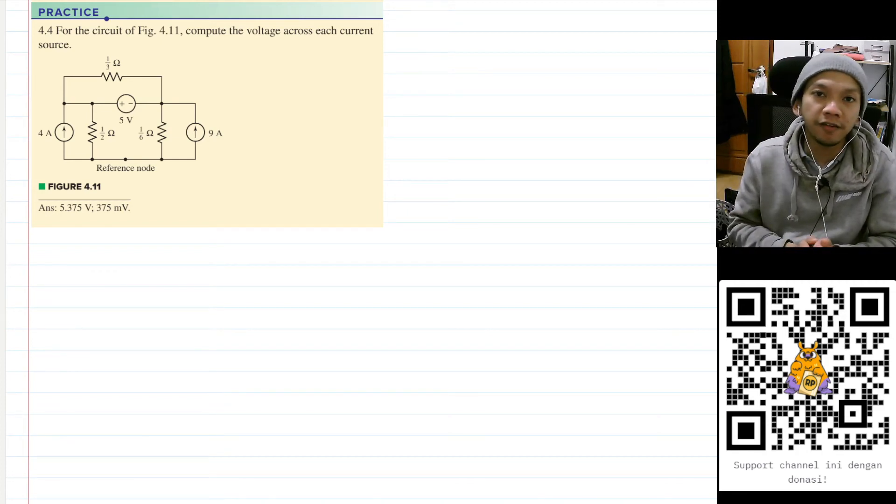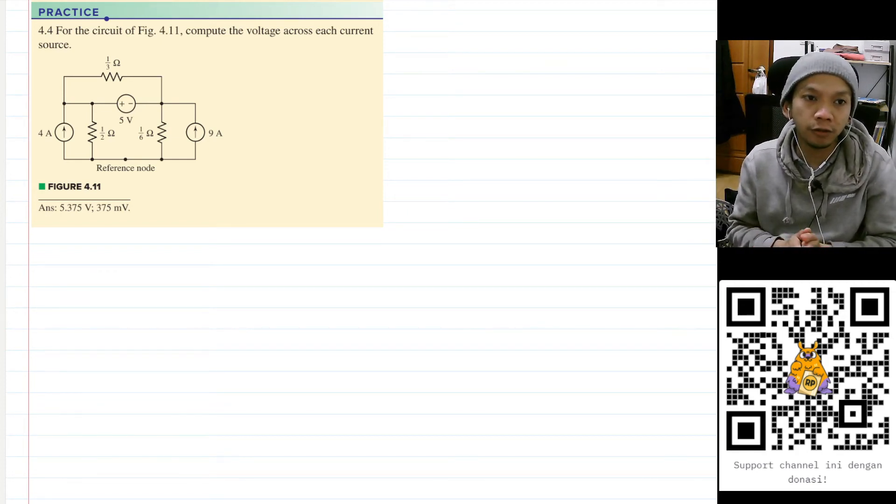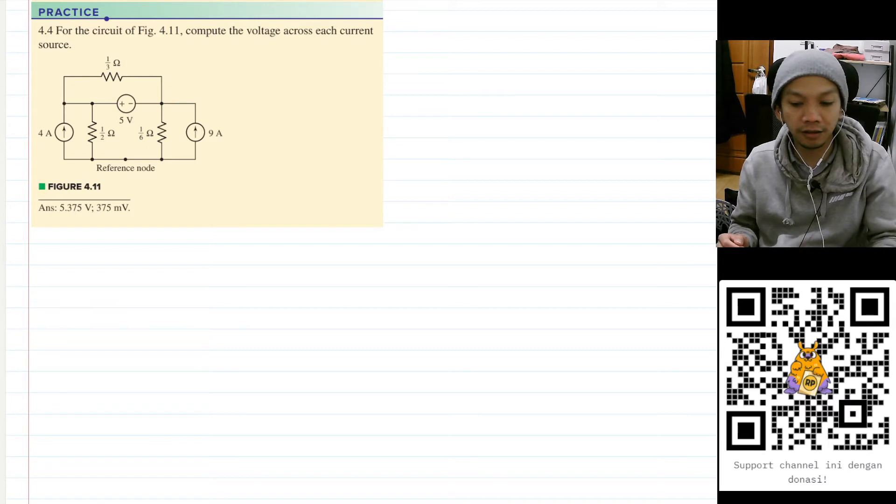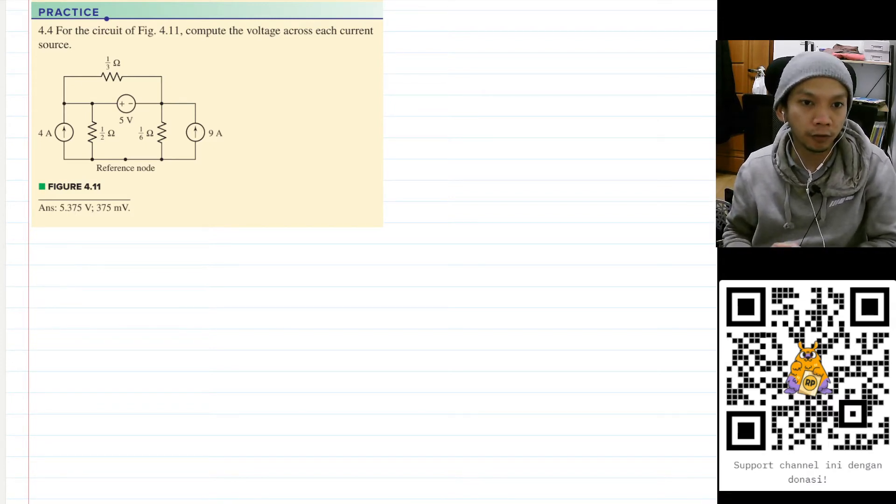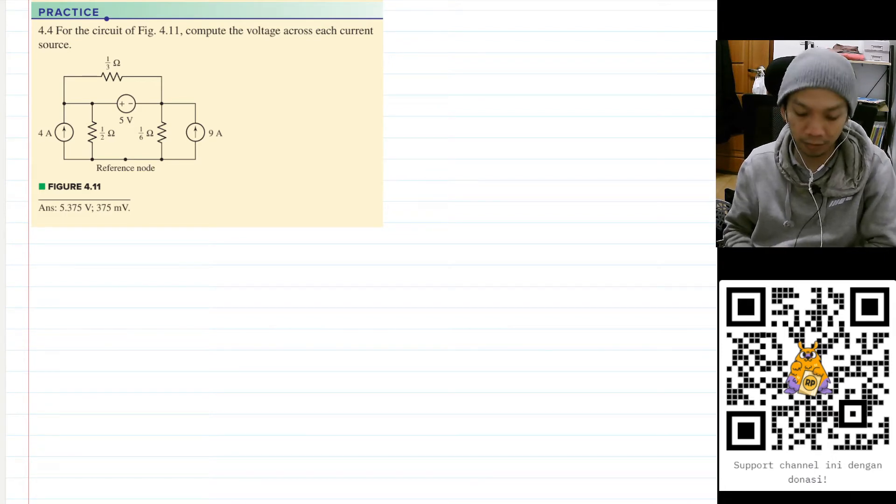Okay, hello. My name is Ardy and today we are going to solve practice problem 4.4 from the engineering circuit analysis book. The question is: for the circuit in figure 4.11, compute the voltage across its current source.